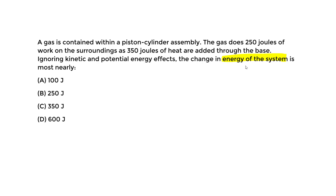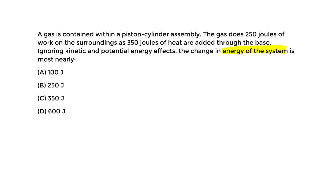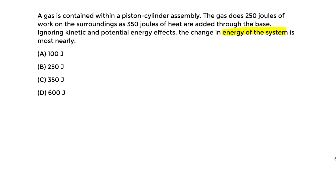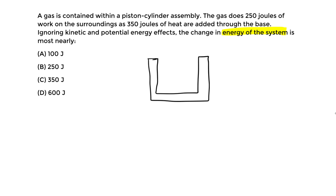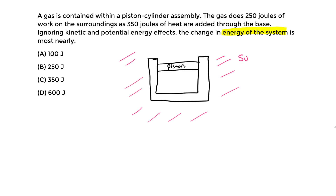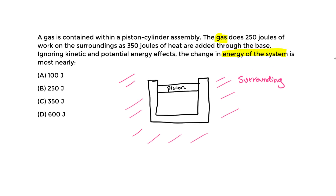What does this mean visually? Using this specific case, we have a piston-cylinder assembly — let's draw a picture. We draw the cylinder on the outside, looking at a cross section of the assembly. This is the cylinder, and we have a piston as the stock portion. Anything outside of this is the surroundings. Inside we have a gas — I'll use green for the gas.